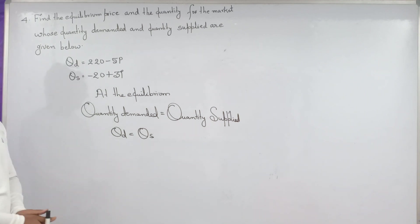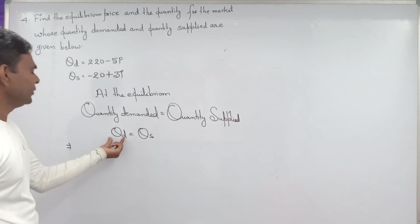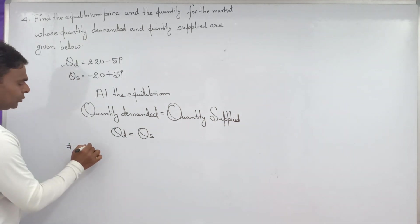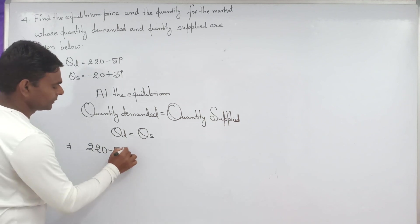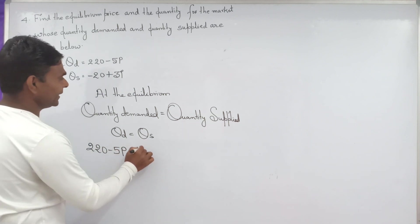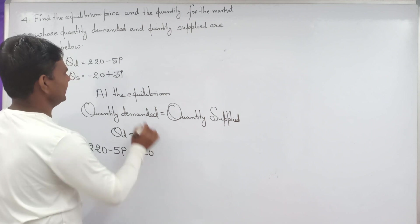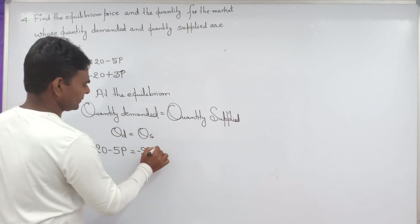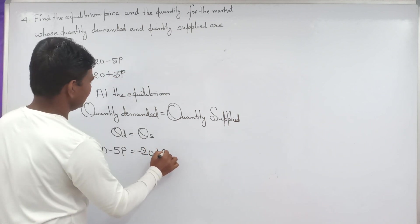Two values are given in this question. Information for QD and QS are given in this question. Just we need to substitute these two values. Both information are given. 220 minus 5P equal to minus 20 plus 3P.